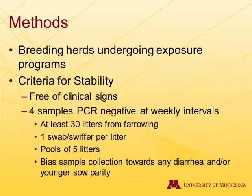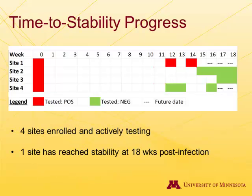The sampling bias is toward increasing sensitivity as high as possible. So far we have four sites enrolled and actively testing — an interesting spread of results. Site one was still positive at 12 and 14 weeks, and the next test would be at the 16th week of their break.